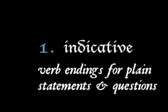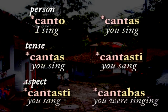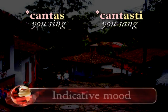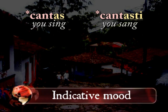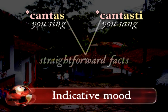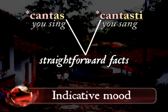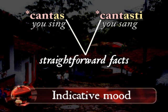Let's add one more feature of Romance verbs to persons, tenses, and aspects. It's called Mood. So far the verbs we've met gave us information about who performed an action and when. They were all matter-of-fact about it — cantas for 'you sing', cantasti for 'you sang', that kind of thing. We might even say that they all indicate who does what. They're in the indicative mood.